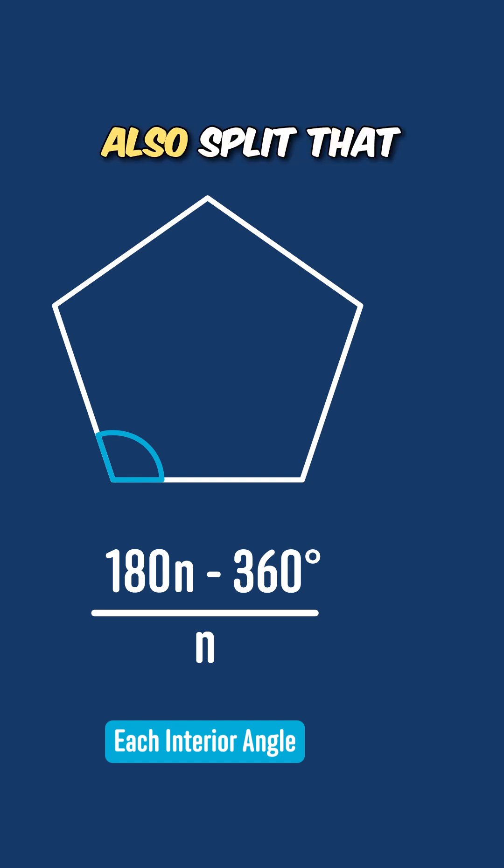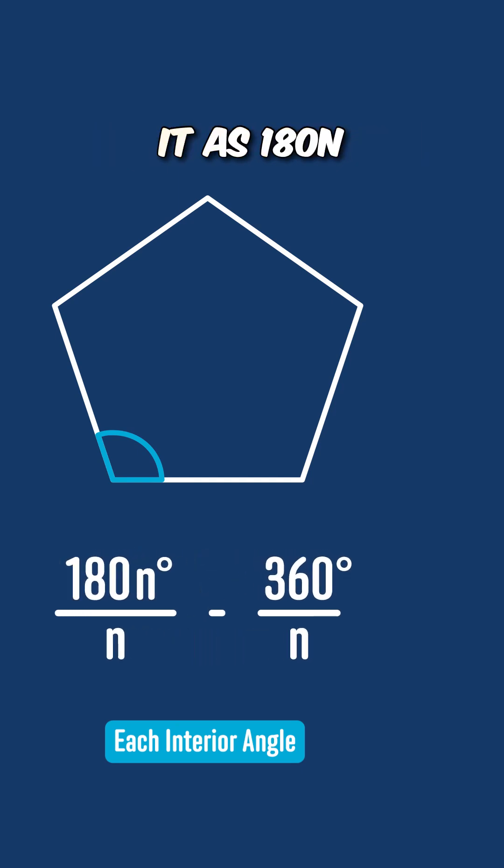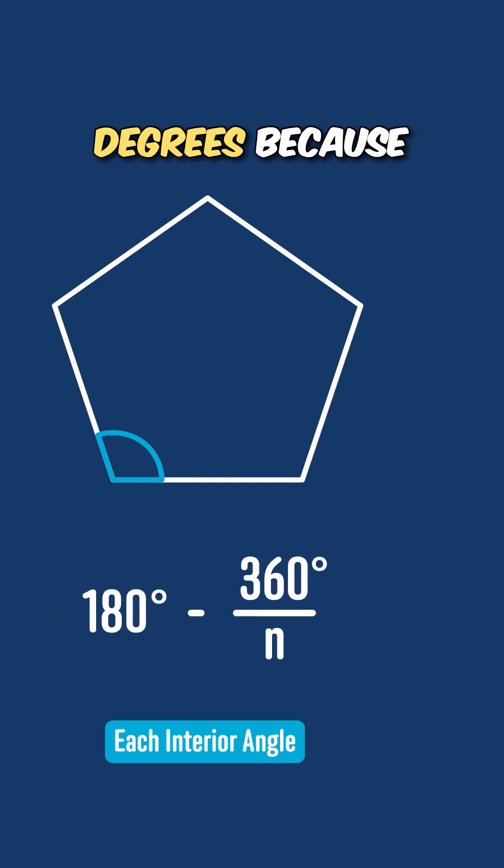We could then also split that into two fractions, and write it as 180n divided by n, minus 360 divided by n. The first part would just simplify to 180 degrees, because the n's would cancel out, and the second part is 360 divided by n. So our formula becomes 180 minus 360 divided by n.